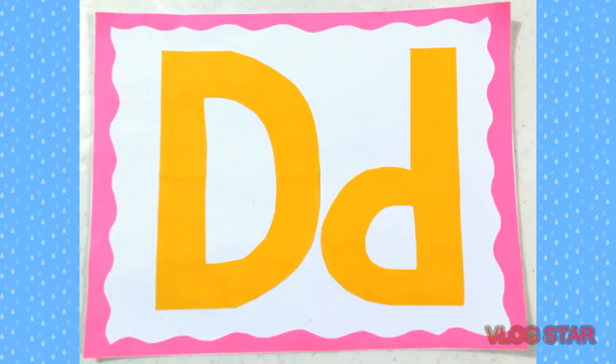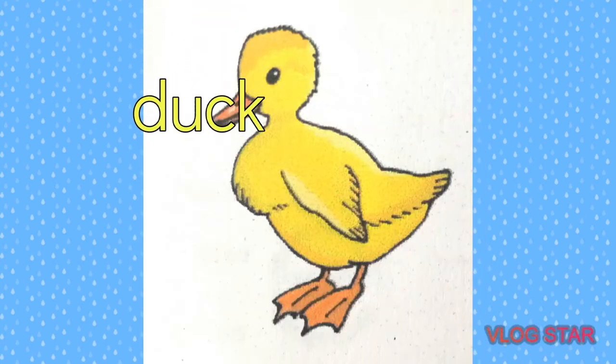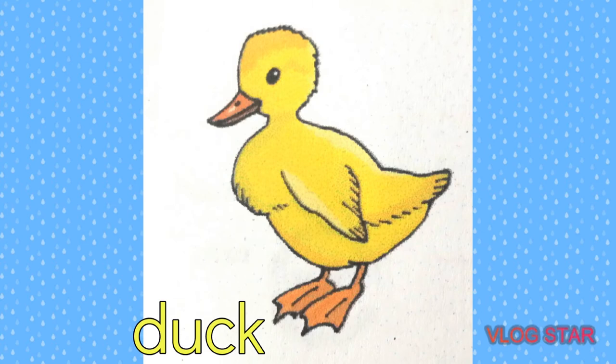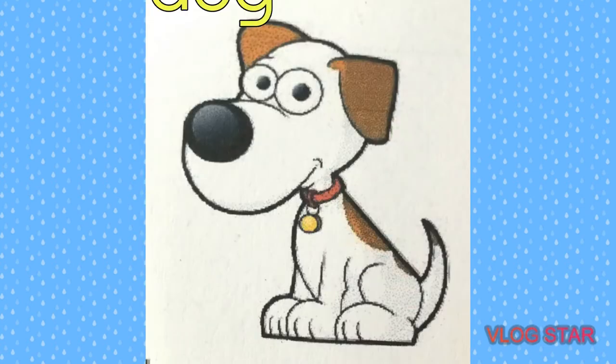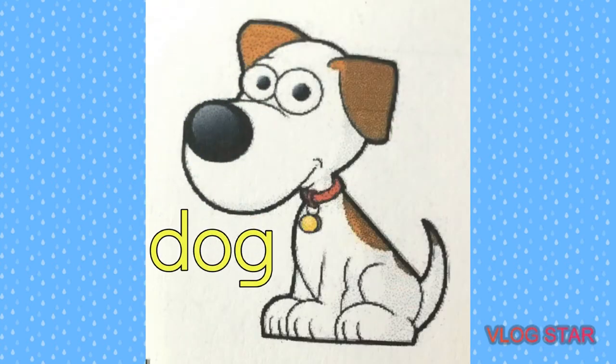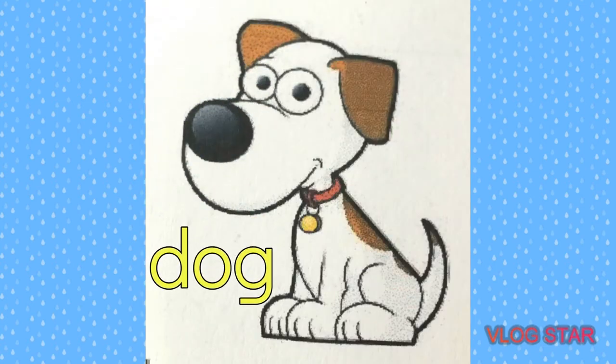Pictures that begin with the letter D, sound D. Duck — ducks are mostly aquatic birds and mostly smaller than swans and geese. Say duck. Dog — man's best friend. Dog is a pet animal. Dog.